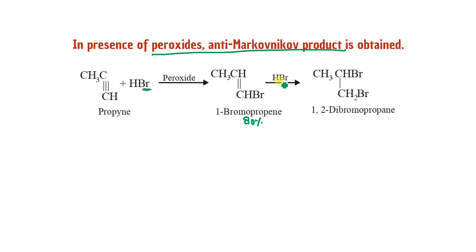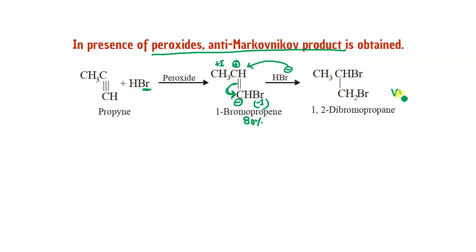If the reaction continues on the vinylic halide product: hydrogen is now equal (one on each carbon), so we use inductive effect. CH₃ is an electron-releasing group (+I effect), so the bond breaks on that side. Br⁻ attaches there, forming a vicinal dihalide. So HBr with peroxide on an alkyne ultimately gives a vicinal dihalide.